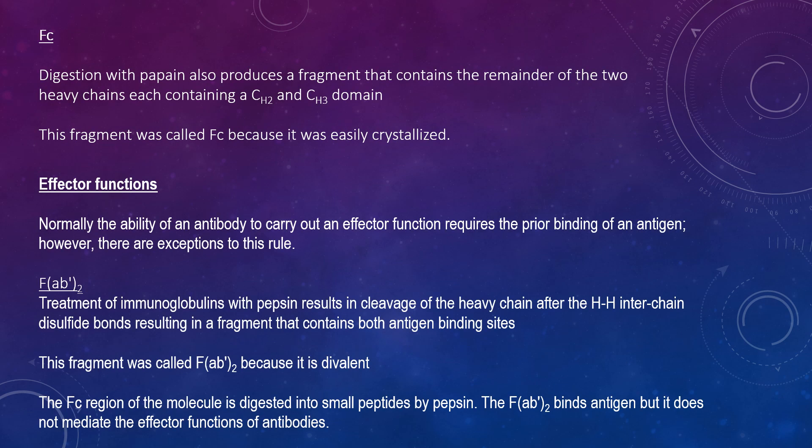Digestion with papain also produces a fragment that contains the domains of the two heavy chains, each containing a CH2 and a CH3 domain. This fragment was called Fc because it was easily crystallized. The effector functions of immunoglobulins are mediated by this part of the molecule. Different functions are mediated by different domains of this fragment. Normally, the ability of an antibody to carry out effector functions requires prior binding of antigen.